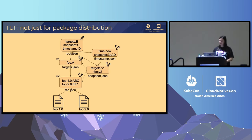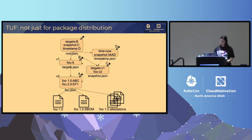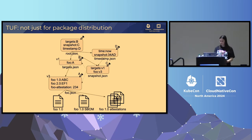So that's how TUF works for package distribution. What if we want to distribute not just software, but all that supply chain metadata we talked about? The simplest version is you just add those items — signed by the same key or a separate key — to the end of this distribution tree. This totally works and is a valid approach.